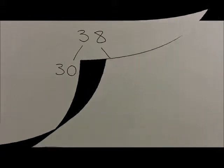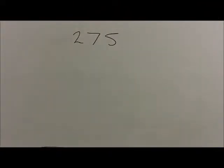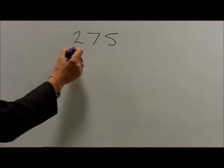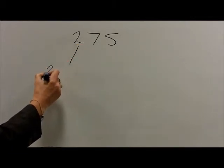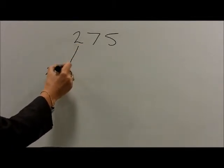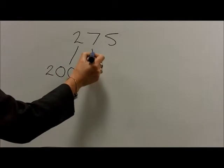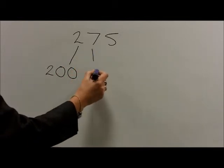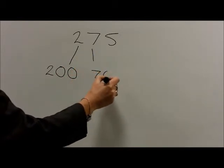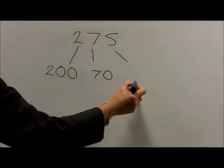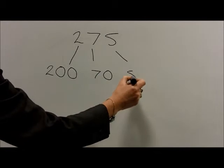For the number 275, this is split into its hundreds. So 2 one hundreds are 200, 7 tens are 70, and 5 units are 5.